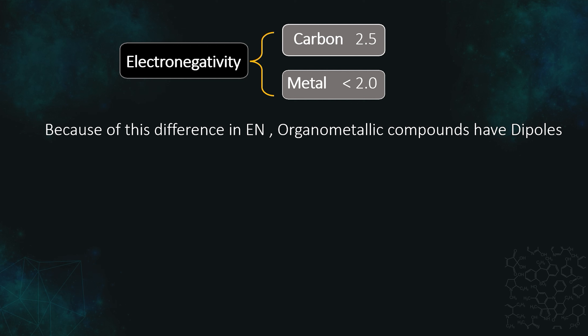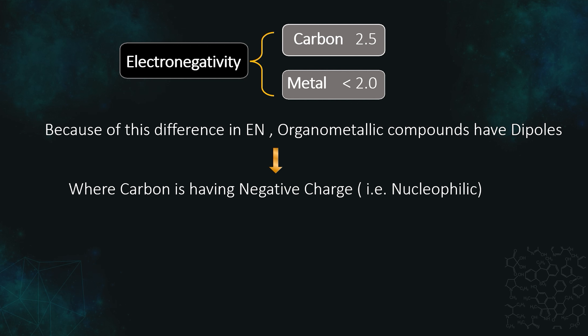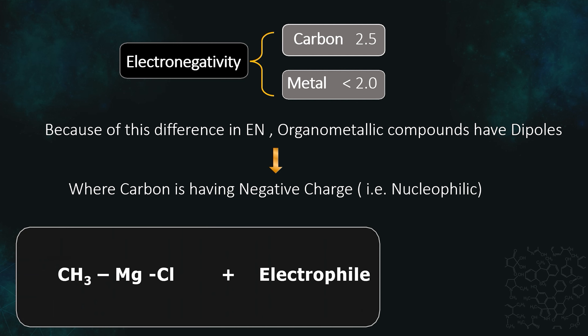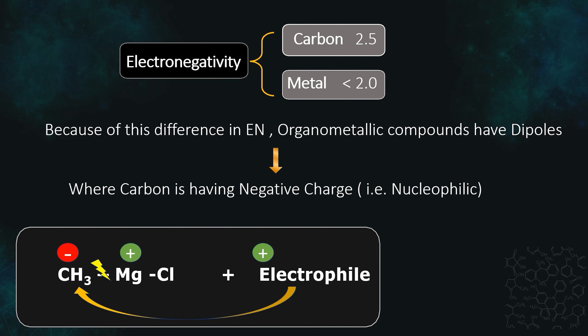Because of the difference in electronegativity, organometallic compounds have dipoles where carbon carries a negative charge. For example, in methyl magnesium chloride (CH3MgCl), the electronegativity of carbon is 2.5 and magnesium is around 1.2, so the bonding electrons shift toward carbon, giving carbon a negative charge and magnesium a positive charge. Since electrophiles carry positive charge, they are attacked by the negatively charged carbon. From the next video we will learn how to draw structural formulas, calculate double bond equivalents, and much more. Today we discussed the history of organic chemistry — please like, share, and subscribe.